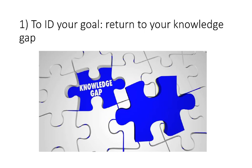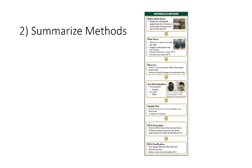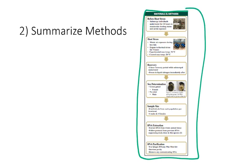So how do we go about writing this abstract? We want to break it down into those main components, identify each of them, and put it all together. First, to identify the goal of your study, go back to your knowledge gap — think about what you're trying to accomplish, why it's important, what gap you're trying to fill, and what new information your results will provide. Then summarize the methods: condense the full picture down into one or two sentences covering overall what was done.